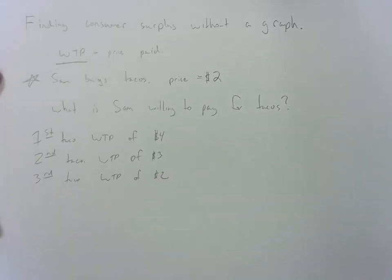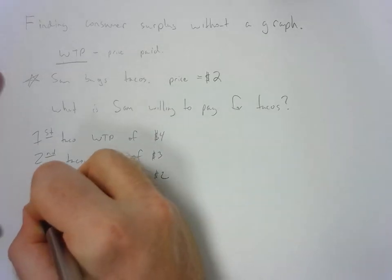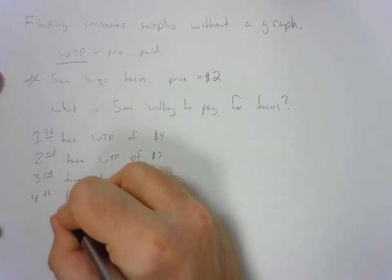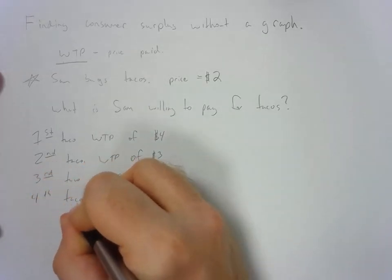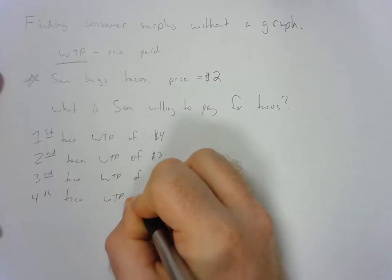For the fourth taco, if we ask Sam how much she is willing to pay to consume it, she responds with a willingness to pay of $1.